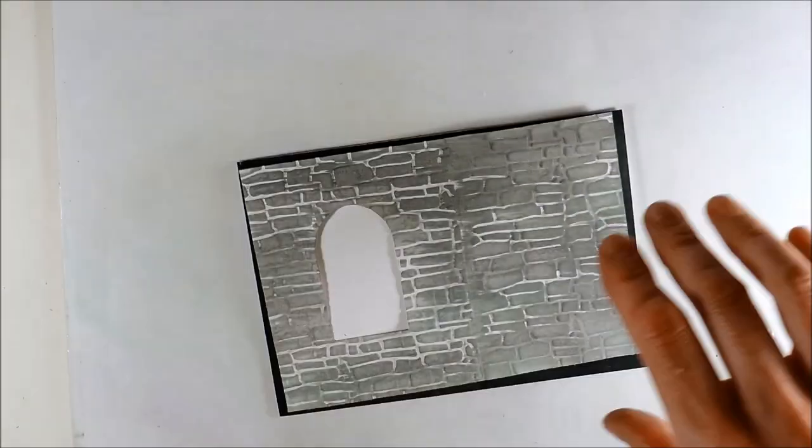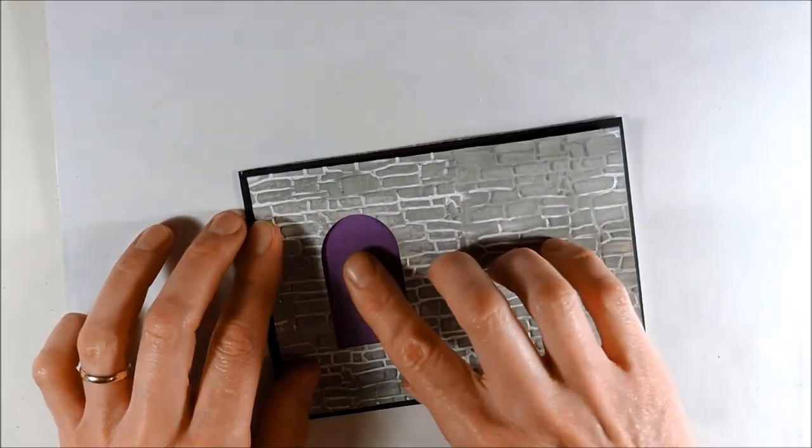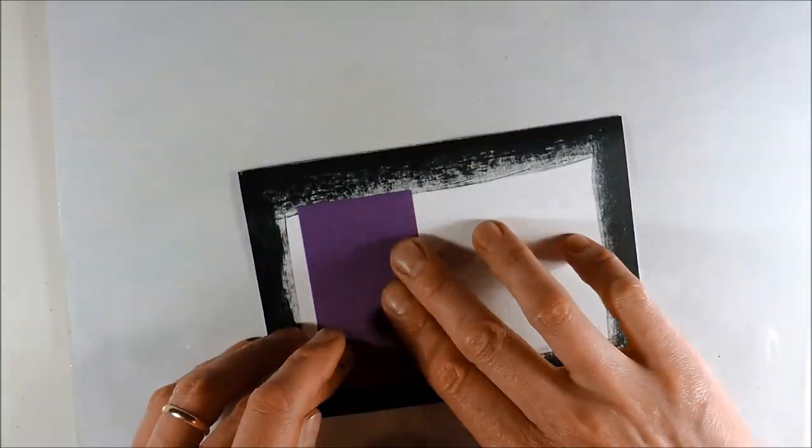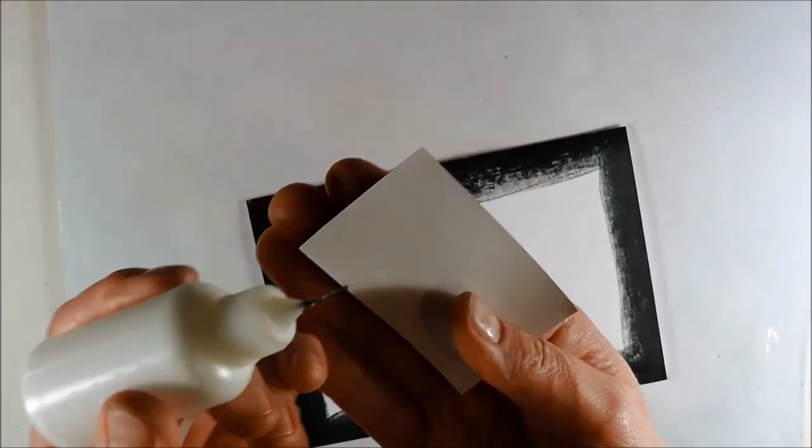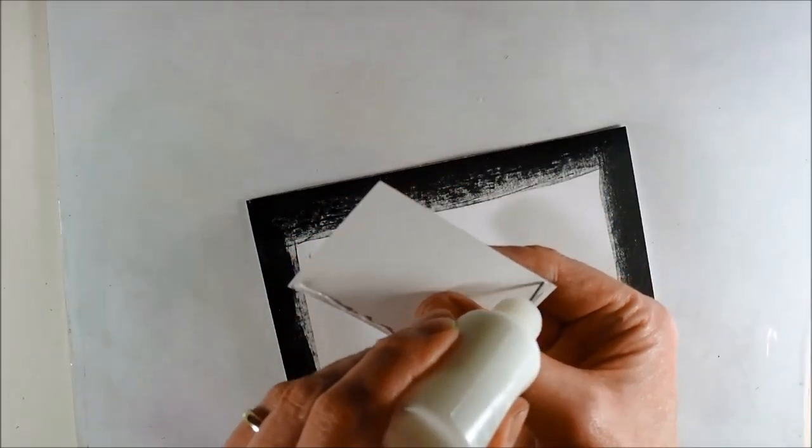For the inside of the window I have chosen a scrap piece of pattern paper. Here I am finding the right position and then I am adhering the piece using some wet adhesive, which I am applying with a fine tip bottle.